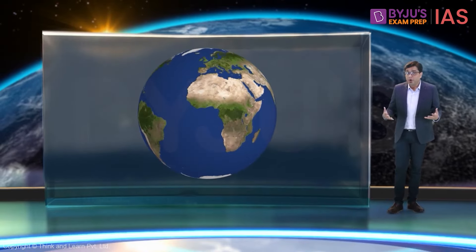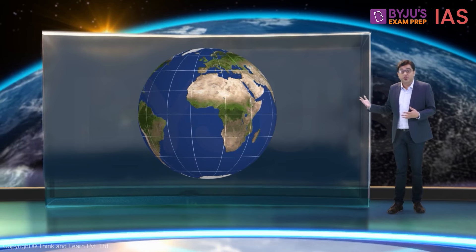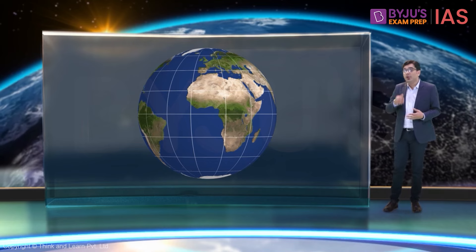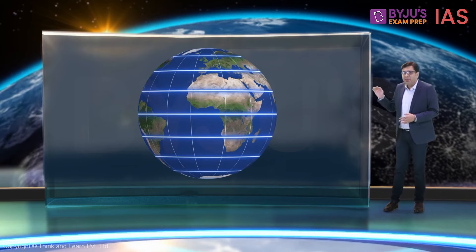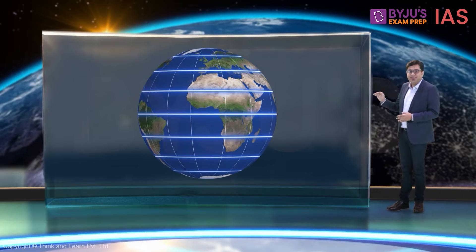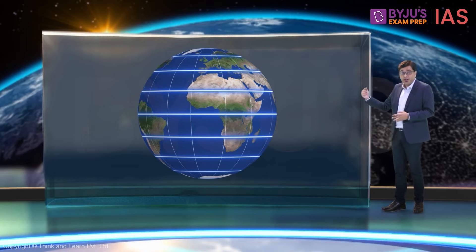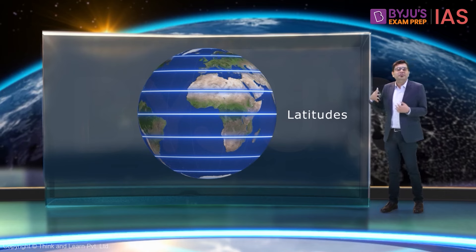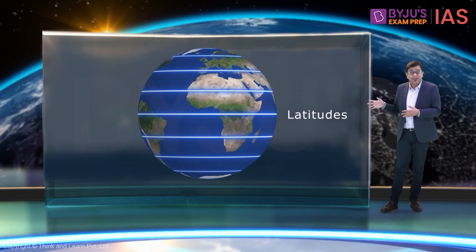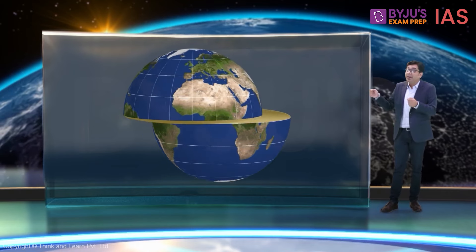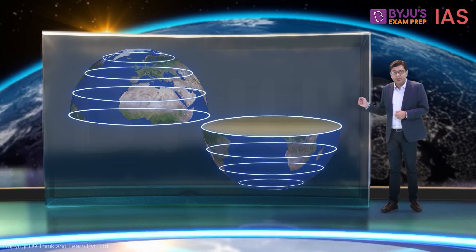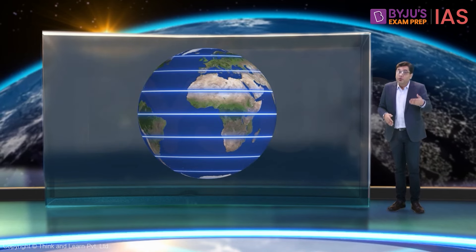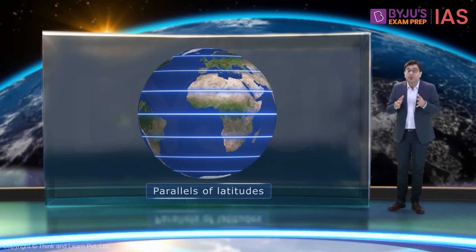To solve this problem, a global grid was developed, incorporating the lines of latitude and longitude. These imaginary horizontal lines that run parallel to each other are called latitudes. From this view they appear as straight lines, but they are actually circles. As these lines are parallel to each other, they are also called parallels of latitude.